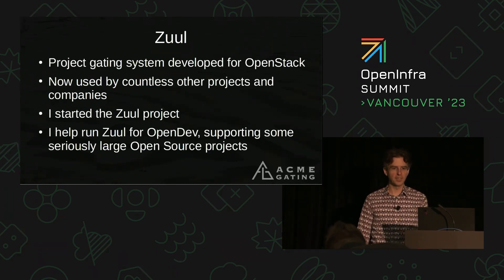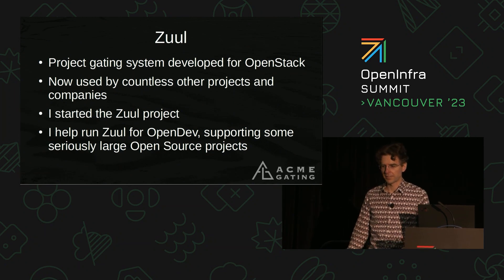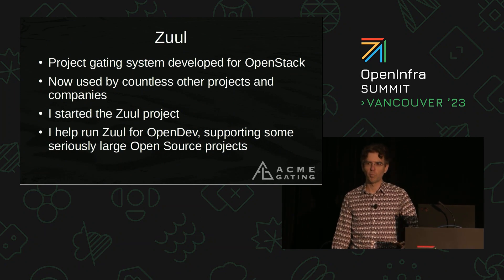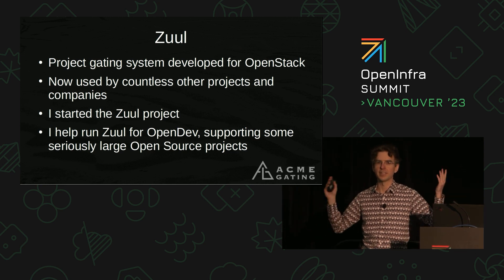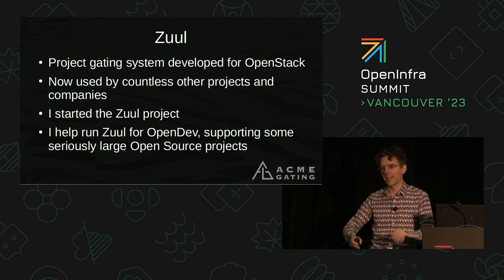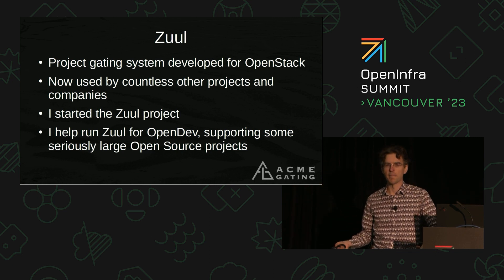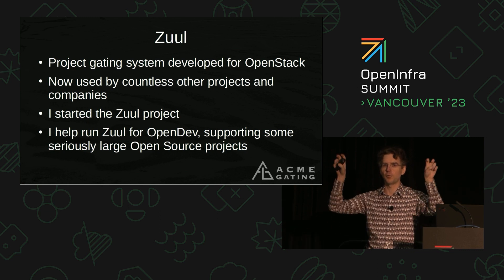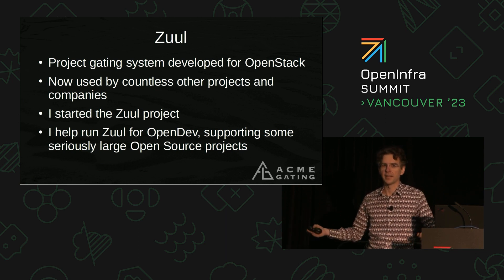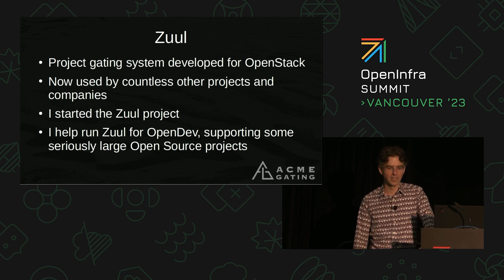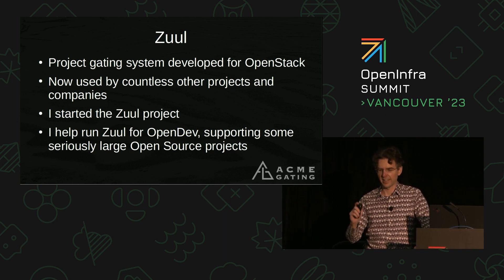Zool is the project gating system that was originally developed for OpenStack. Part of the reason we developed it is that OpenStack has all these different projects — Nova, Glance, Keystone, and so on — and they all get developed independently, but at the end of the day we want them all to work together and ship something called OpenStack. So Zool is really designed for that use case: having lots of projects, lots of Git repositories, and incorporating them in various ways to produce some whole.